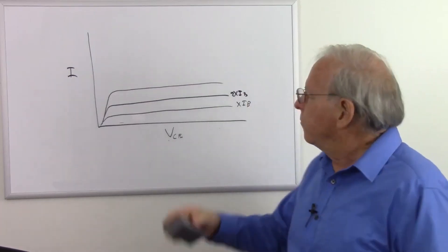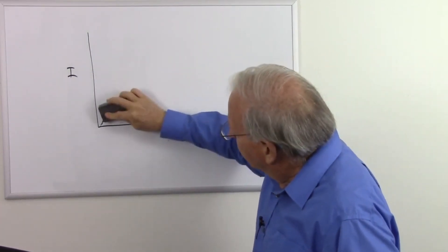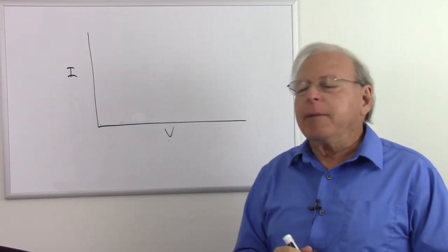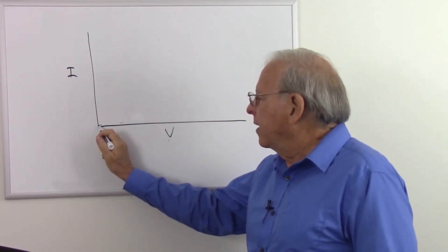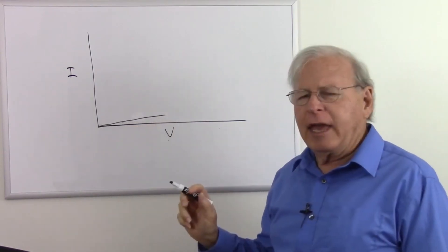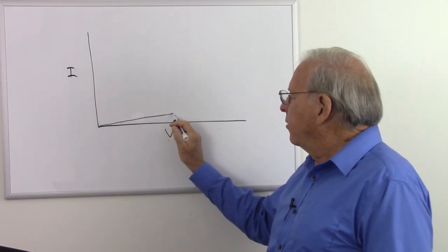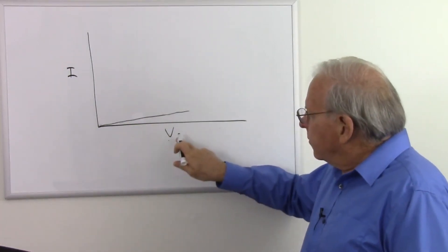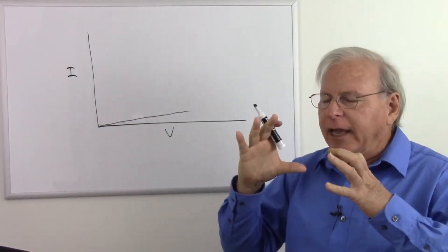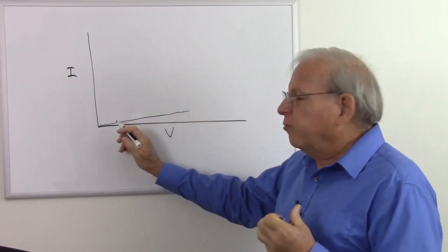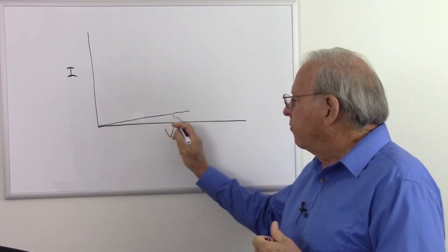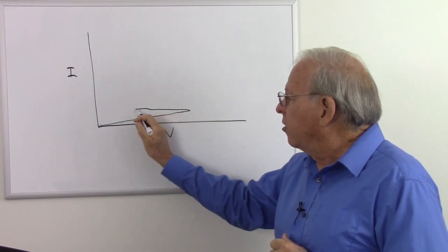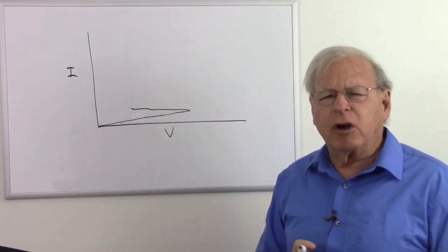Now we're going to look at the curve for a unijunction transistor. As we increase the emitter-to-base voltage, we see it goes up slightly — sort of looks like a diode actually. We get a very slight increase in current, but then something funny happens. As we increase the current, we get a slight increase in voltage, but suddenly we get to a certain point where our voltage goes down as we increase our current. So our current is going up, but yet our voltage is going down.